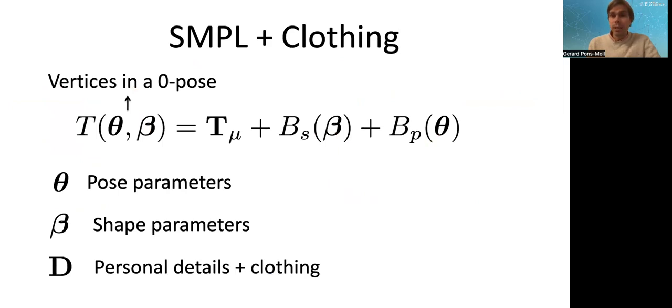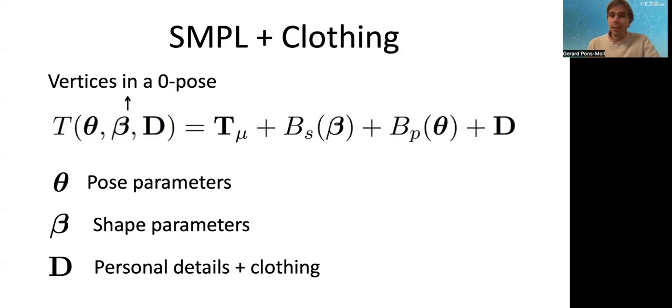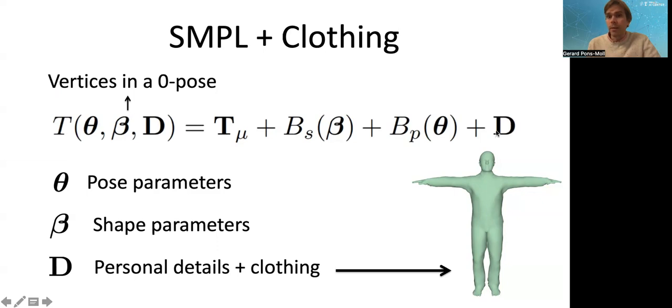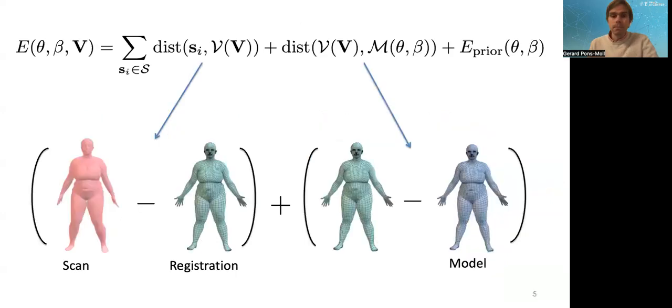The problem of SMPL is that it does not model clothing. The question is how we can extend SMPL in a simple way to model clothing. The easiest thing we can do is to add a set of displacements D that are going to model personal details and clothing. Essentially, you would go from an undressed body in the canonical pose to a clothed body, including hair and facial details in the canonical pose. Notice that D here is not parametrized by any latent parameters, like some parameters that encode the clothing. These are the full matrix of displacements, so this has a lot of degrees of freedom.